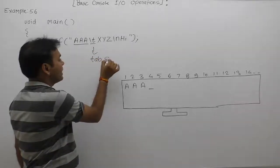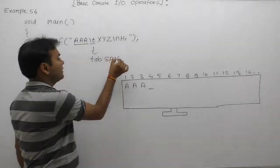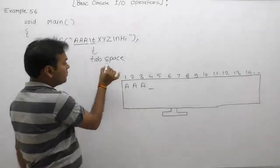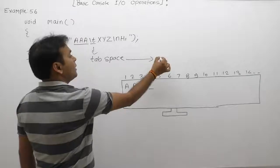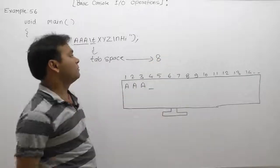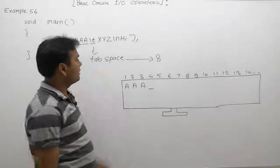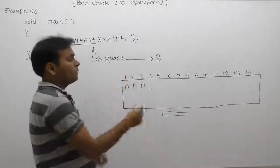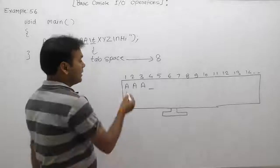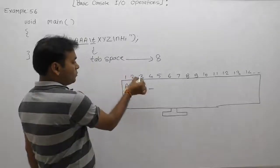According to the tab space character, it will move the cursor after eight spaces, but it counts the number of positions from the beginning position in multiples of eight.